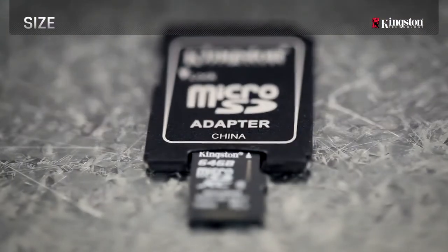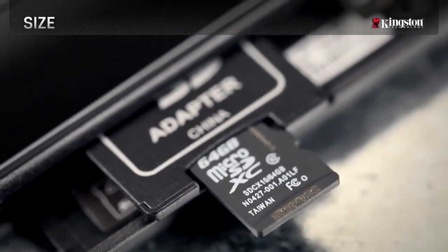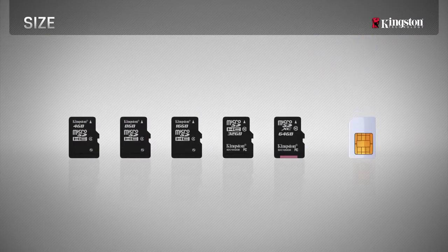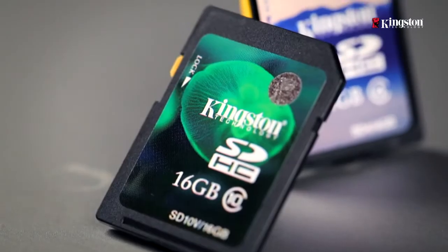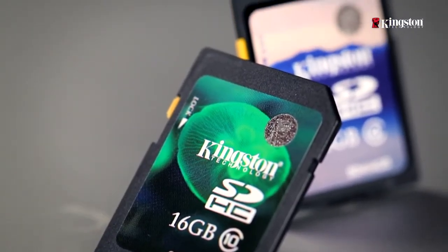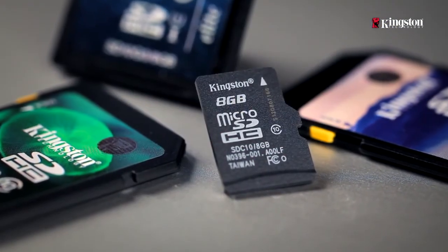They can be plugged into an adapter and used just like an SD card. Micro SD cards may look like SIM cards, but they function differently. SIM cards are designed to access cell phone networks and do not include extra storage. Now that you know what to look for in a card, look no further than Kingston.